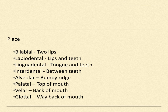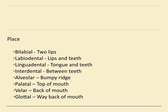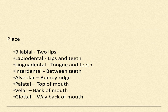Then we have lingua-dental — 'lingua' meaning tongue, 'dental' meaning teeth — and interdental, which means between the teeth. Alveolar is that bumpy ridge behind your top teeth, up on your palate. Some sounds are made up there. We've got palatal, which is the top of your mouth. Velar is the back of your mouth — those are the K, G, and NG sounds made just before the soft palate. And then glottal, made way in the back of the mouth. There aren't many glottal sounds in English; you see more in other languages.